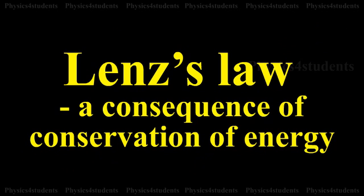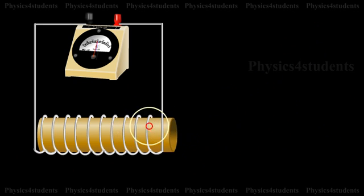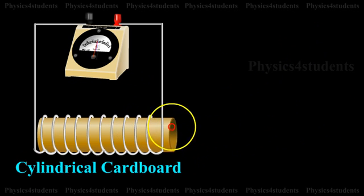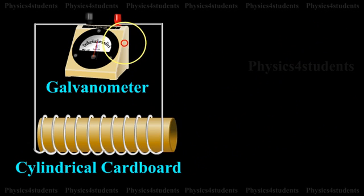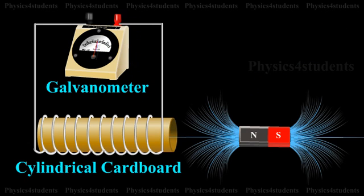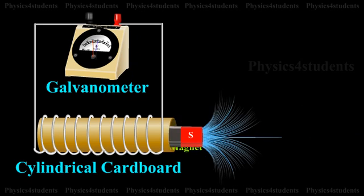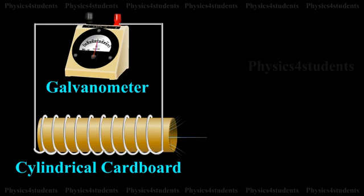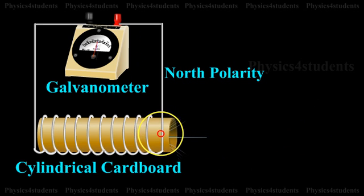Lenz's law, a consequence of conservation of energy. Copper coils are wound on a cylindrical cardboard and the two ends of the coil are connected to a sensitive galvanometer. A magnet is moved towards the coil as shown in the animation. The upper face of the coil acquires north polarity.